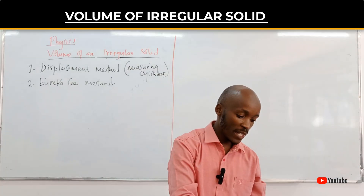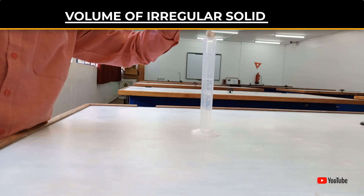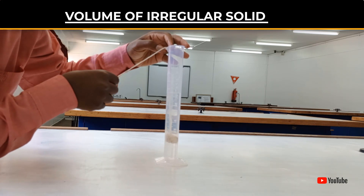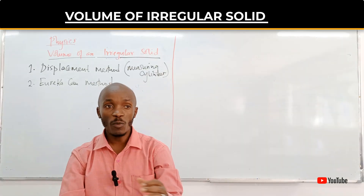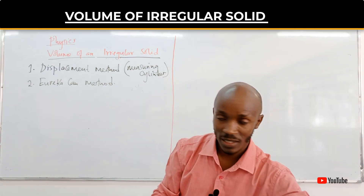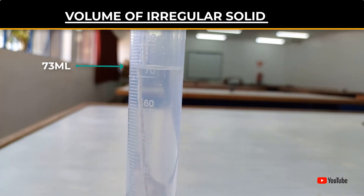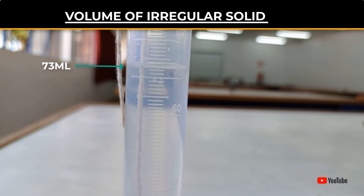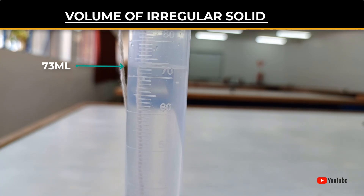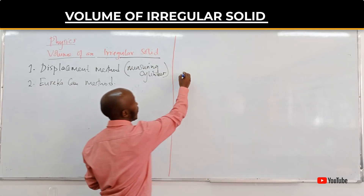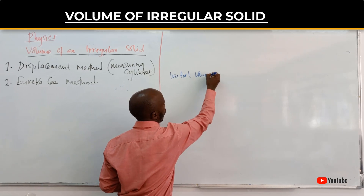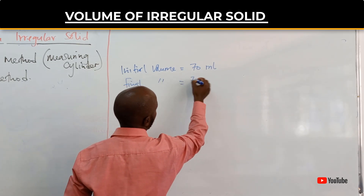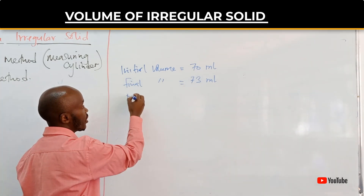Then you pick the irregular solid and dip it inside — gently lower it in, not dropping it. The volume of water should be enough to completely immerse it. Once checked on a flat surface, you can see the water has risen to 73 centimeter cubed. So the initial volume of water was 70 milliliters and the final volume is 73 milliliters.